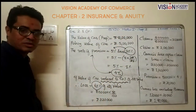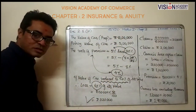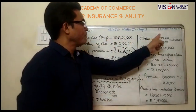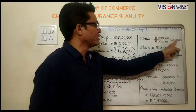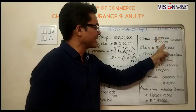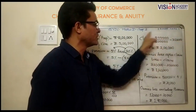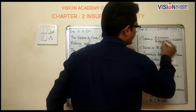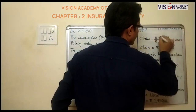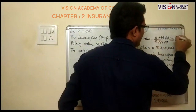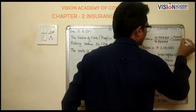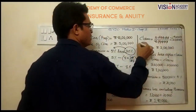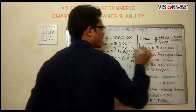40 percent of 8 lakhs is rupees 3 lakhs 20 thousand. Now for the claim — same formula: policy value upon property value into loss. 5 lakhs upon 8 lakhs into 3 lakhs 20 thousand. Calculating this gives claim of rupees 2 lakhs.